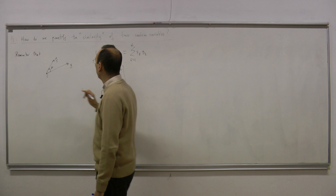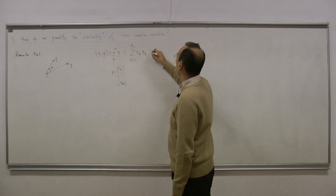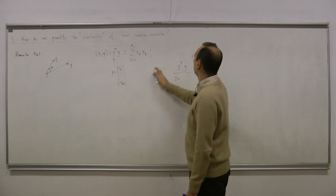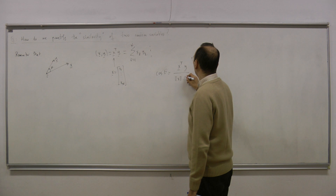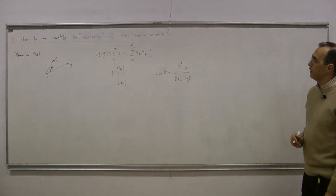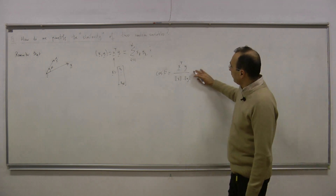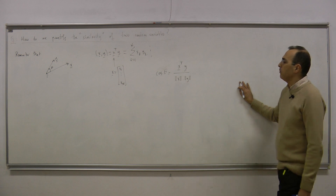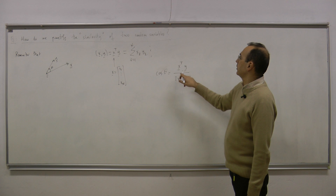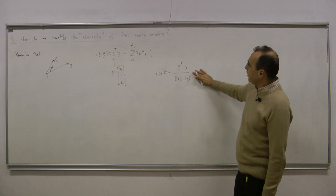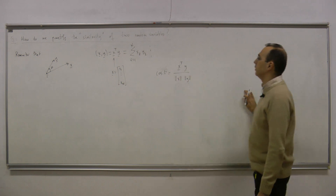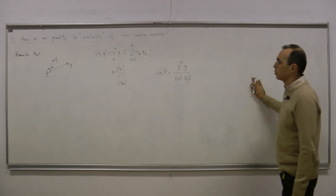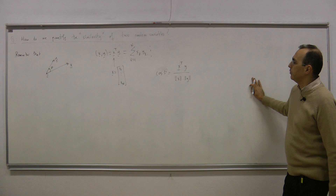How do we define the angle? Cosine theta is defined as the inner product divided by the norm of x times the norm of y. We have defined the Cauchy-Schwarz inequality and said that this number is in magnitude less than 1. Since it's in magnitude less than 1, we can associate a theta angle to it. In n-dimensional, three-dimensional, or two-dimensional vectors, this makes a lot of sense because it is the actual angle between the two vectors.